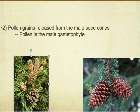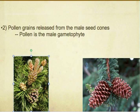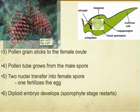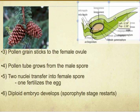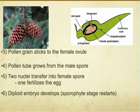When the male cones grow up, they release the pollen grains. The pollen grains are basically the gametes for the male part of the plant. The third step is the pollen grain sticks to the female ovule after being released. The fourth step is the pollen tube grows into the male spore. Two nuclei transfer into the female spore — one fertilizes the egg, and the other one is unused.